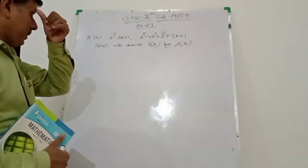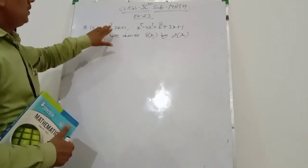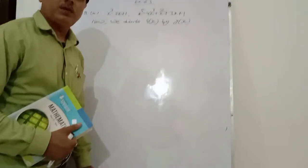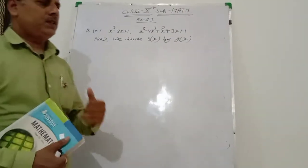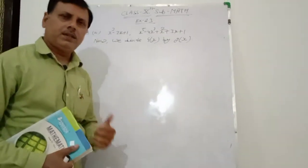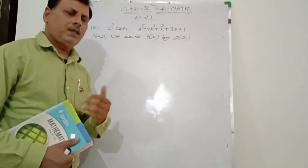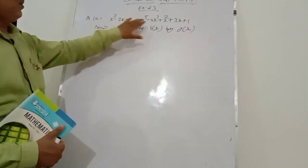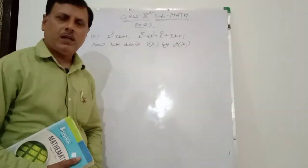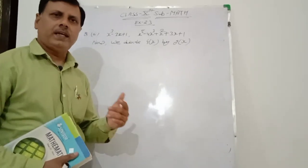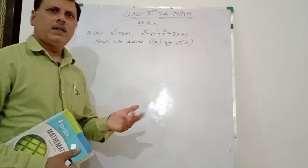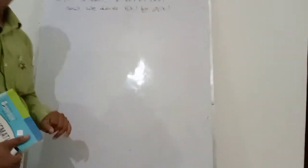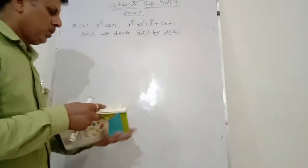Students, हमें यहाँ पर prove करना है कि first polynomial is the factor of second polynomial. अगर हम long division method से इसको divide करते हैं, if remainder is 0, then it is proved that this is a factor of the polynomial. If remainder is not 0, then g(x) is not a factor of f(x). So let us solve them.